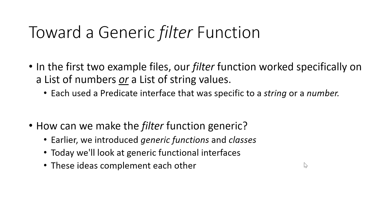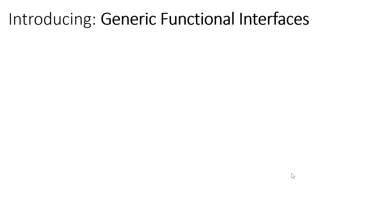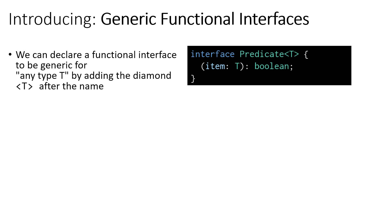We should be able to use generic functions to have a single filter function that works for any type of list, as long as it has the correct type of predicate to go along with it. To do this, we first need to understand what a generic functional interface is. We're going to say that the interface Predicate is generic for any type T by adding the diamond syntax after it, just like we would with a class.